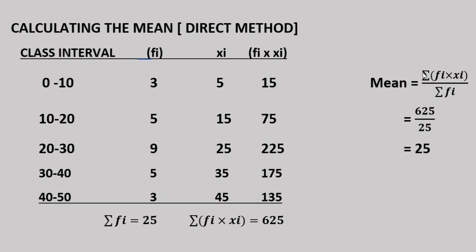The formula is: summation of fi into xi, divided by summation of fi — that is, the frequency multiplied by xi, divided by the total frequency sum.